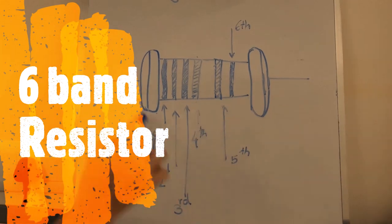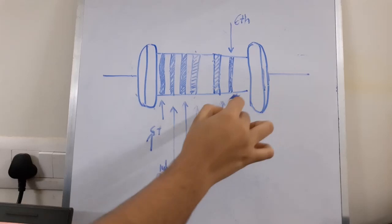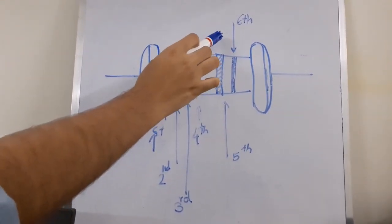A six band resistor is basically a five band type with an additional band indicating the reliability or temperature coefficient.